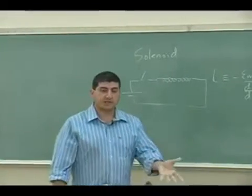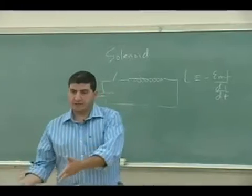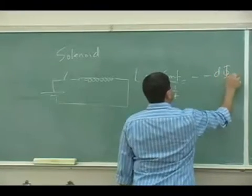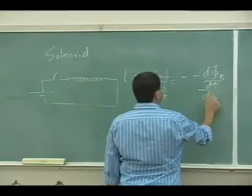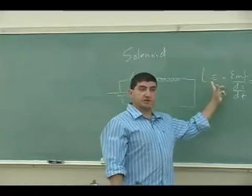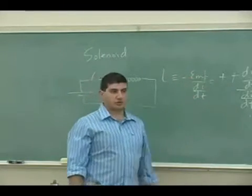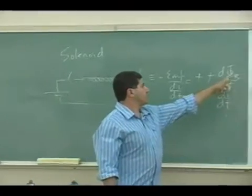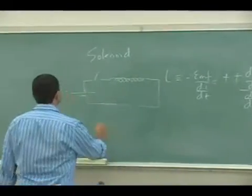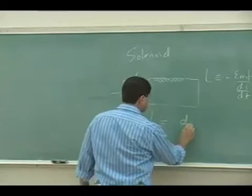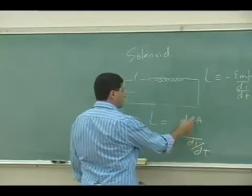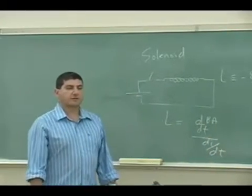The EMF that it produces is given by Faraday's equation: EMF is equal to negative d(phi_B)/dt over di/dt. The two negatives cancel — in the definition of L there was already a negative, and then the two negatives cancel from Faraday's equation. Then phi_B is B times A — the magnetic field times the area — and then the area comes out, and you differentiate the magnetic field.